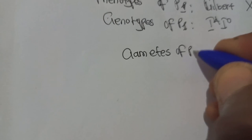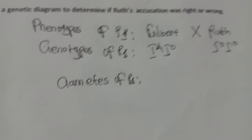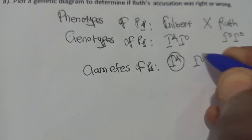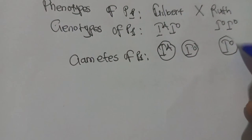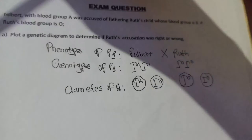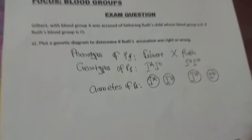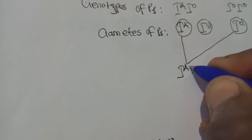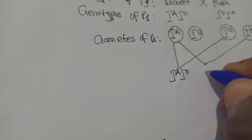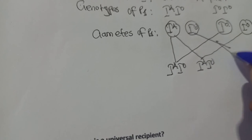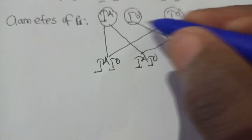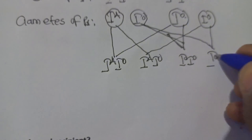Next are the gametes. When writing gametes under genetics, we write the genotypes separately. For Gilbert: I-superscript-A alone, then I-superscript-O alone. For Ruth: I-superscript-O alone, then I-superscript-O again. Then we cross over. I-superscript-A with I-superscript-O gives I-superscript-A I-superscript-O. Then I-superscript-A with I-superscript-O gives I-superscript-A I-superscript-O again. Then I-superscript-O with I-superscript-O gives I-superscript-O I-superscript-O, and again I-superscript-O I-superscript-O.